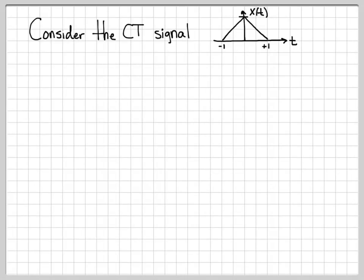In this example, we're going to work with the continuous time signal x of t, which is this triangle signal. We are going to compute the convolution of x of t with itself — so we're going to compute y of t, where y of t is the convolution of x of t with x of t.